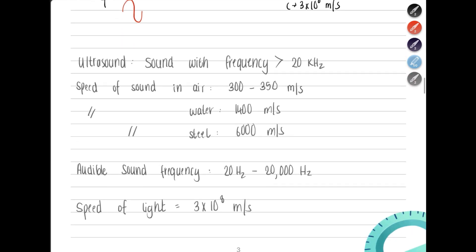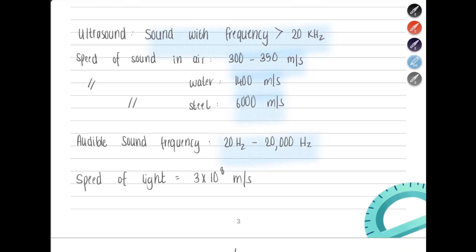Then these are some quantities that may help you. What is ultrasound? Ultrasound is sound with a frequency greater than 20 kilohertz. Speed of sound in air is 300 to 350 meters per second. In water is almost 1400 meters per second. And steel is almost 6000 meters per second. I also saw that concrete has the speed of sound of 5000 meters per second. This is very important. Audible sound frequency is from 20 hertz to 20 kilohertz. Speed of light in vacuum is 3 multiplied by 10 to the power of 8 meters per second. Take care of the units.